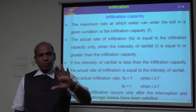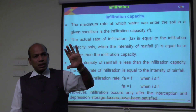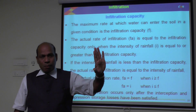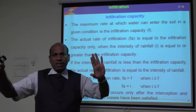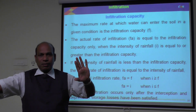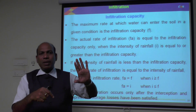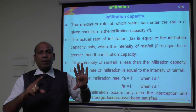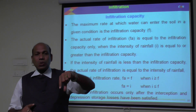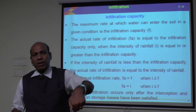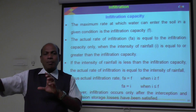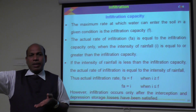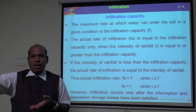For example, if the infiltration capacity of the soil is 10 mm per hour but the rainfall intensity is 15 mm per hour, the actual rate of infiltration is only 10 mm per hour, because that is the infiltration capacity of the soil. The remaining 5 mm per hour flows above the ground surface — that is known as surface runoff.